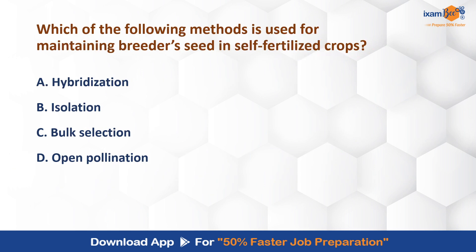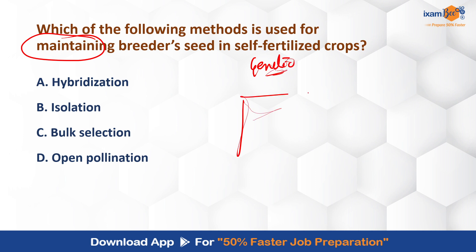Which method is used for maintaining breeder seed in self-pollinated crops? Maintaining means maintaining the genetic purity. In the field, the method used is simple — you observe the crop in the field to ensure genetic uniformity.